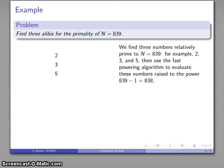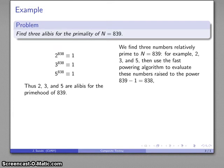I find all three are congruent to 1. So 2, 3, and 5 are all alibis that 839 is prime. There's no evidence yet that 839 is composite.